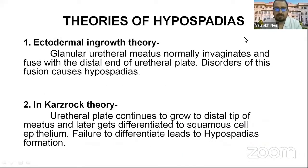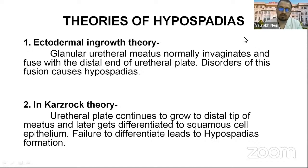Theories of hypospadias. Number one, the ectodermal in-growth theory, in which the glanular urethral meatus normally invaginates and fuses with the distal end of the urethral plate. The disorder of this fusion causes hypospadias. Number two, the Karls-Roch theory, in which the urethral plate continues to grow to the distal tip of the meatus and later differentiates to squamous cell epithelium. Failure of differentiation leads to hypospadias formation.